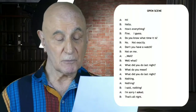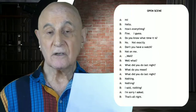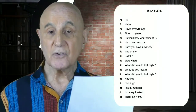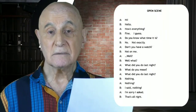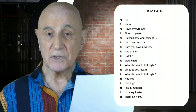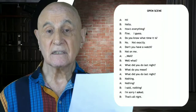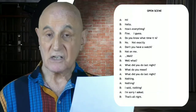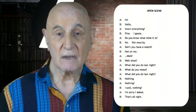I'm going to read it — not for performance, but just so that you can hear what A and B sound like as they're interacting with each other. A: Hi. B: Hello. A: How's everything? B: Fine, I guess. A: Do you know what time it is? B: No, not exactly. A: Don't you have a watch? B: Not on me. A: Well? B: Well, what? A: What did you do last night? B: What do you mean? A: What did you do last night? B: Nothing. A: Nothing? B: I said nothing. A: I'm sorry I asked. B: That's all right. A: Okay.